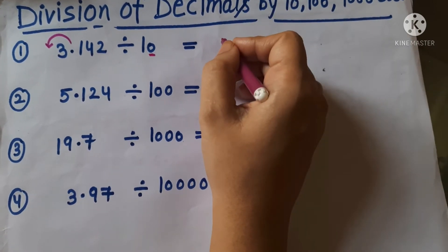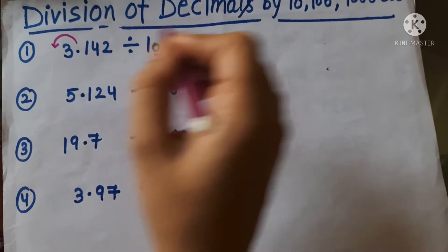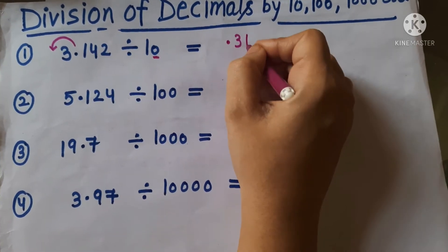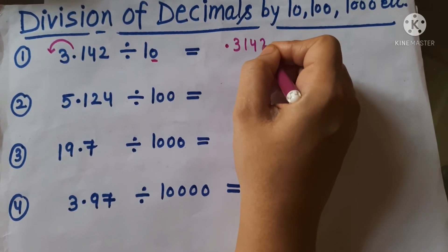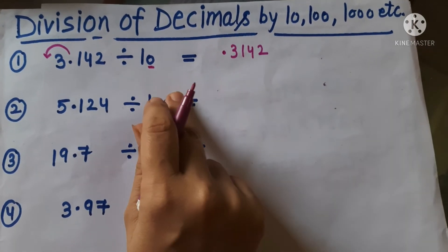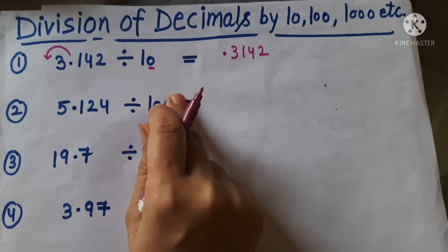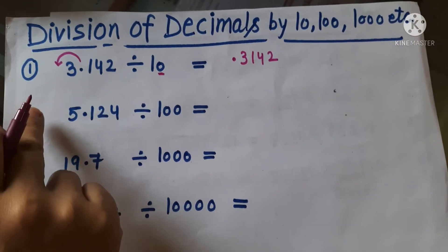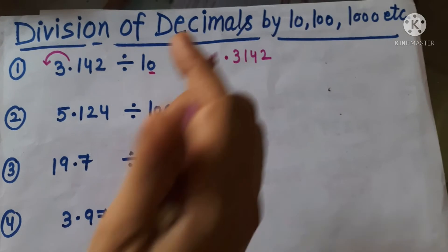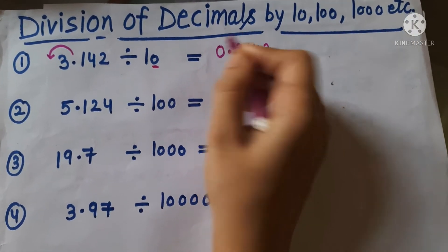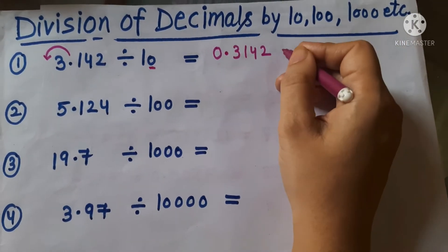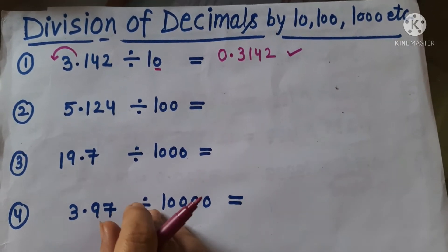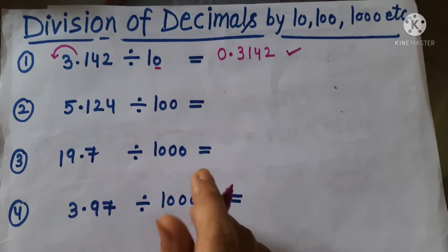So what will be the answer? We shift the decimal one place to the left, giving us 0.3142. The decimal is shifted one step, and you can put a zero on the right side. This is the answer to our first question. I think you got it! Let's move on — with more examples it will be clearer.